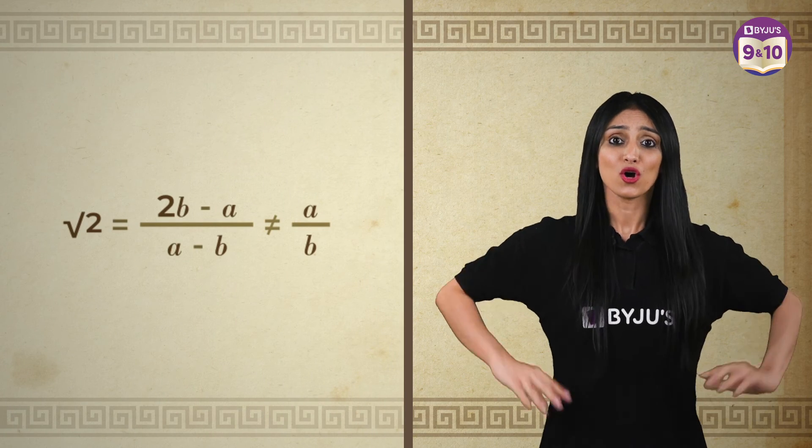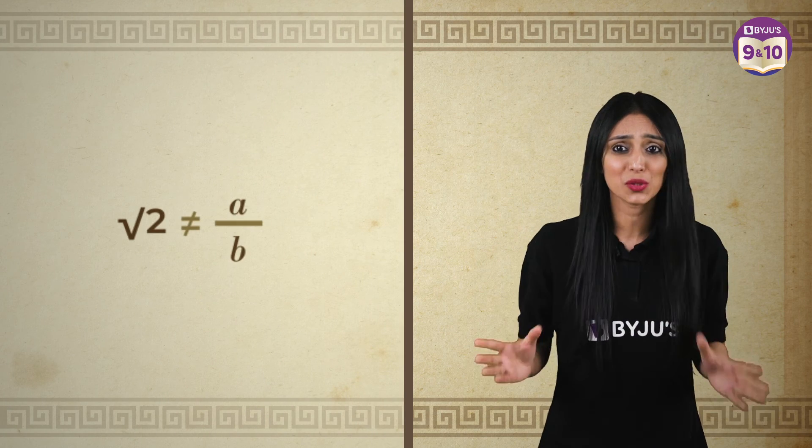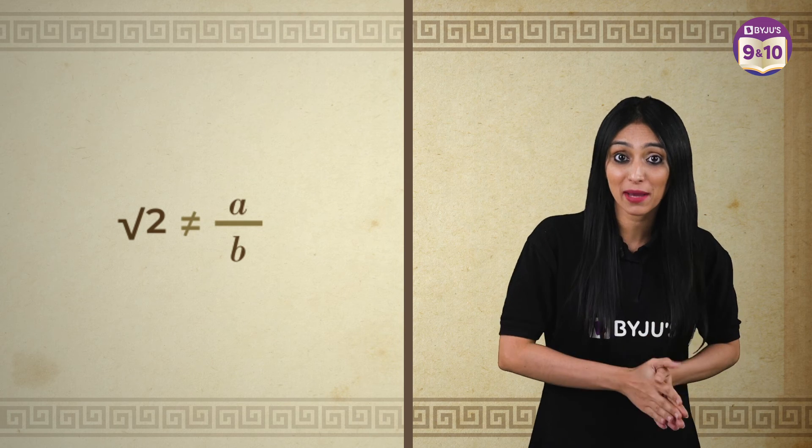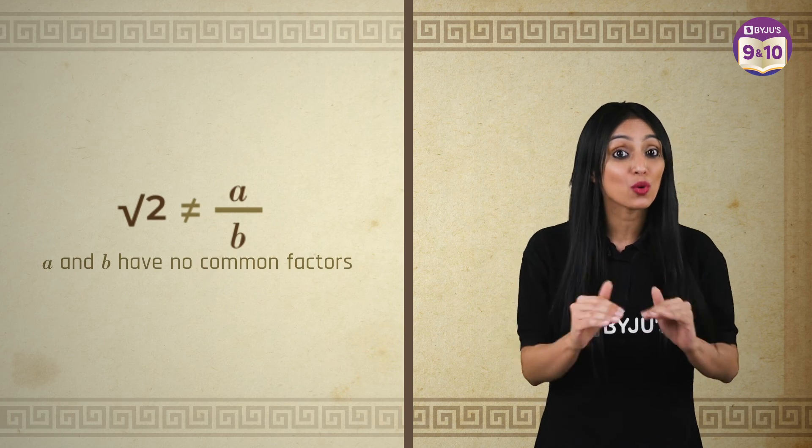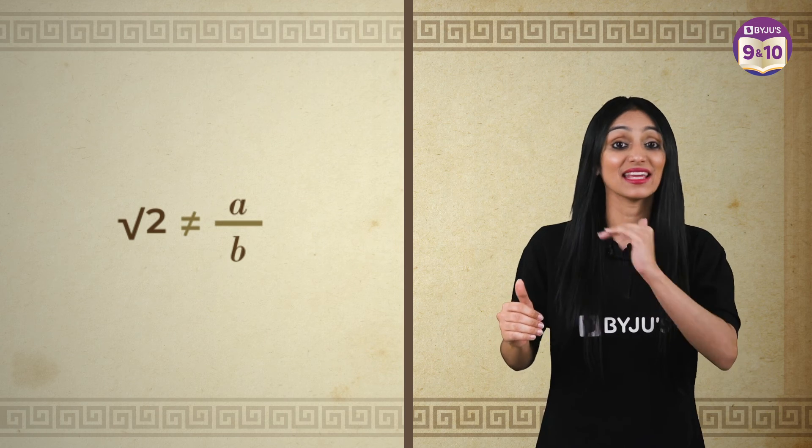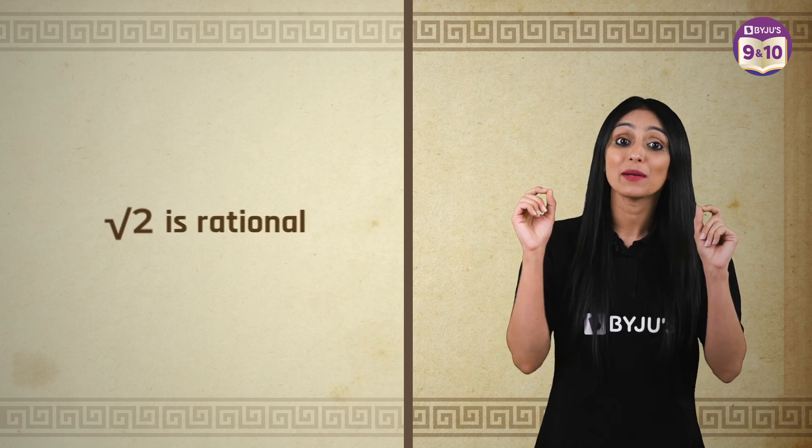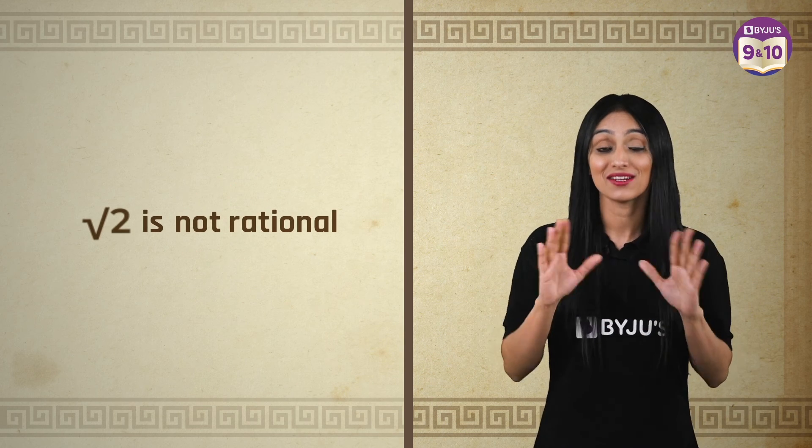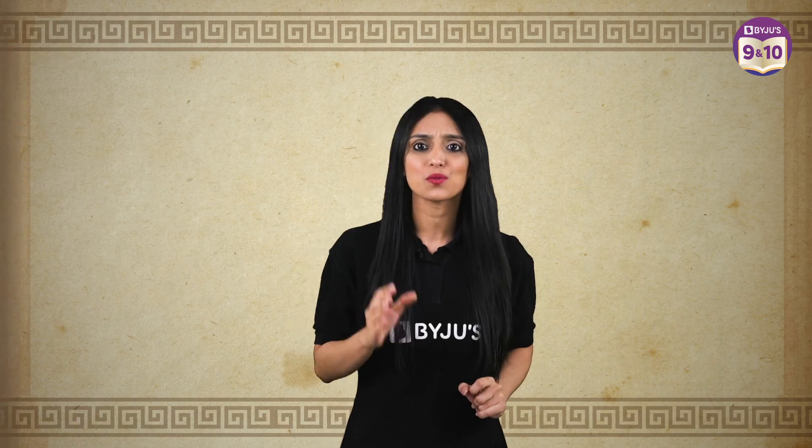Root 2 is not equal to a by b or cannot be represented in the form of a by b where a and b have no common factors. That is they cannot be in the lowest form. So our previous assumption is not true. Therefore it is not rational, it is irrational. Hippasus was right about the irrational number.